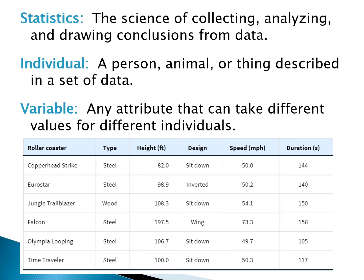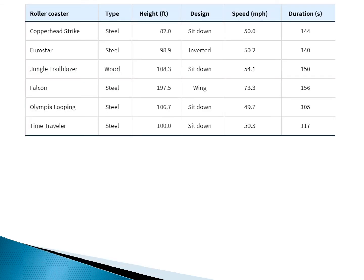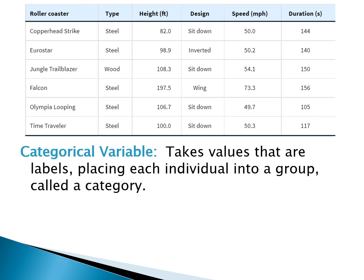In this table, the individuals would be the roller coasters — each roller coaster is an individual that we're collecting data on. The variables are all of these things: the type, the height, the design, etc., and those variables change for each roller coaster.